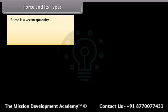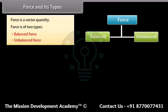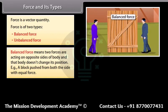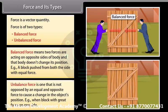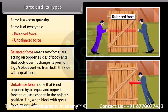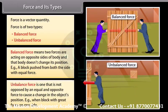Force is a vector quantity. Force is of two types: balanced and unbalanced. Balanced force means two forces are acting on opposite sides of the body and that body does not change its position. Example: a block pushed from both sides with equal force. Unbalanced force is one that is not opposed by an equal and opposite force, causing a change in the object's position. Example: when a block is pushed with great force on one side.